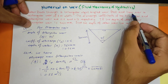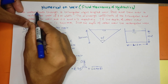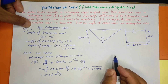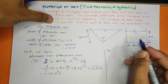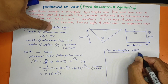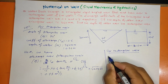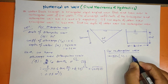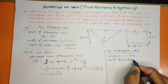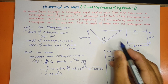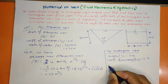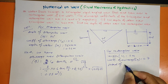We will now solve for the rectangular weir. The rectangular weir width L is 1 meter. The coefficient of discharge CD value is 0.7. The discharge Q equals 0.11 m³/s passing through the rectangular weir.